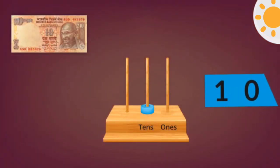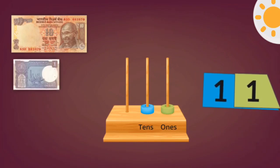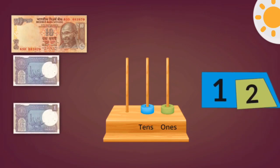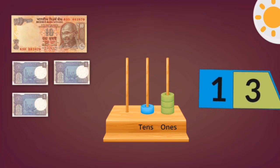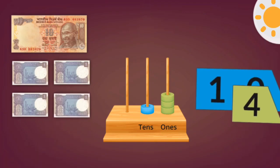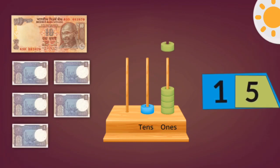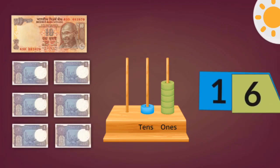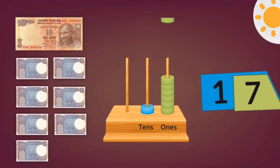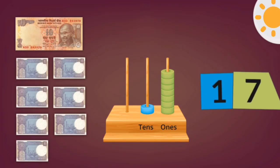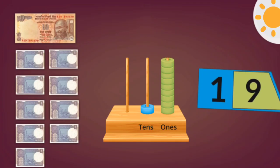Ten and one, eleven. Ten and two, twelve. Ten and three, thirteen. Ten and four, fourteen. Ten and five, fifteen. Ten and six, sixteen. Ten and seven, seventeen. Ten and eight, eighteen. Ten and nine, nineteen.